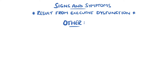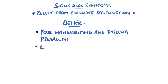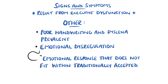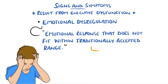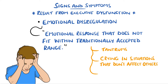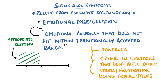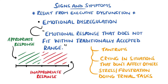Poor handwriting and dyslexia have also been found to be more prevalent in patients with ADHD. Additionally, emotional dysregulation is considered to be a core feature, which is an emotional response that does not fit within traditionally accepted emotional responses. This could be tantrums or angry outbursts, crying in situations that don't affect other people, or becoming easily stressed and frustrated with seemingly trivial tasks. However, it is difficult to define the point at which normal responses end and abnormal ones begin.